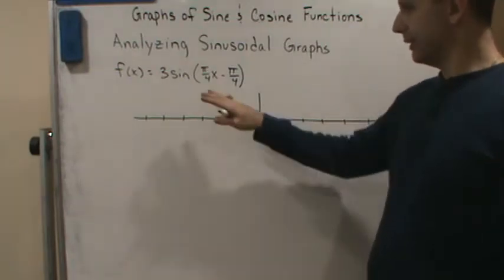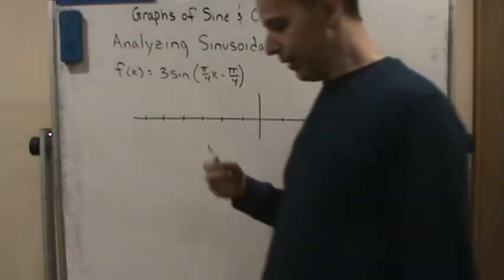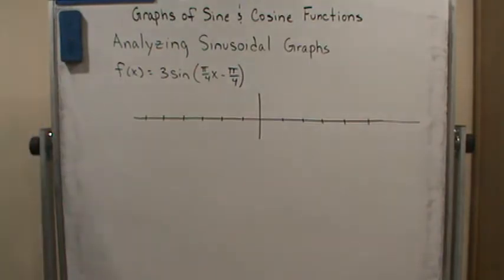So what we're going to do is we're going to again go through the list and write down the important information that we can analyze so that we can graph this thing. In this case here, it's already in the general form.